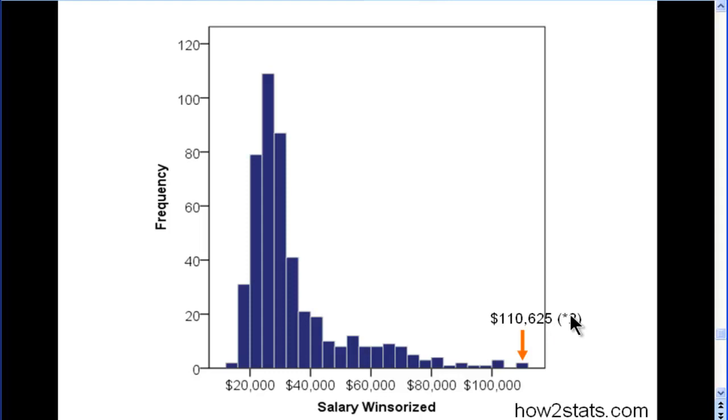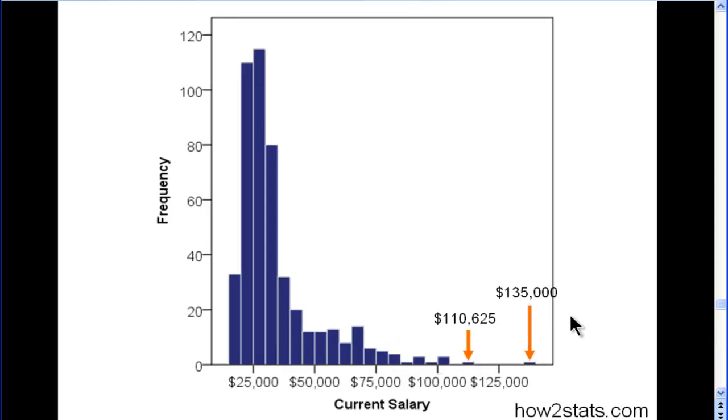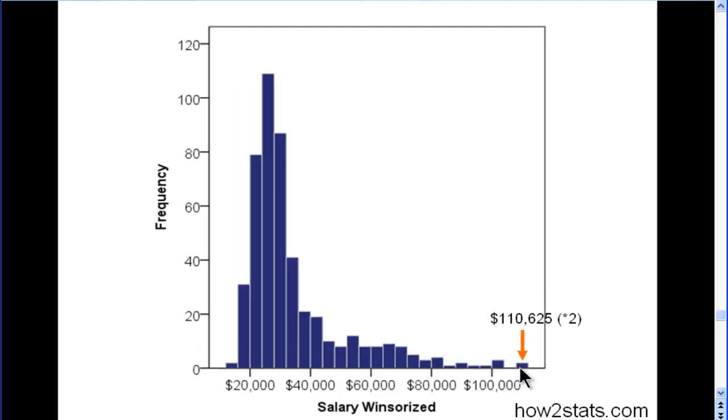That's why I've got times two here. Originally there was only one person that had $110,625, and now you can see that the frequency actually increased. There's two people that have that data point for salary.